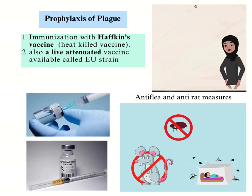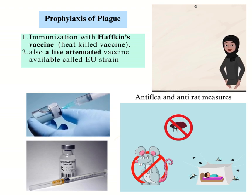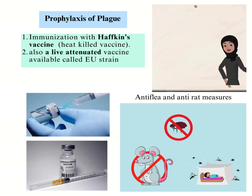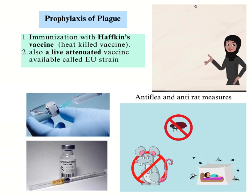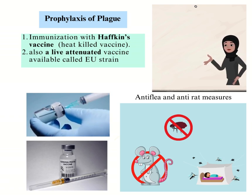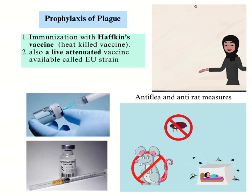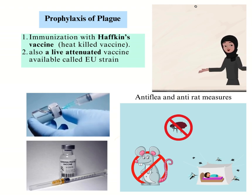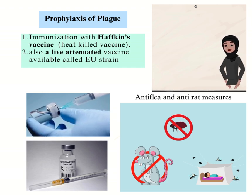Prophylaxis of plague: immunization with Haffkine's vaccine, which is a heat-killed vaccine. A live attenuated vaccine is also available called EV strain. In addition to anti-flea and anti-rat measures.